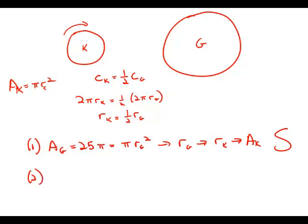Statement number two tells us that the edging around G, so the circumference of G, is 10π meters long. Well, then we know that the edging around K is half of that. The edging around K is 5 meters long.